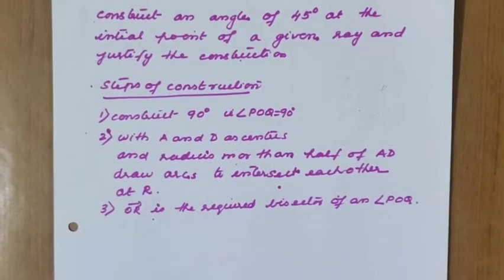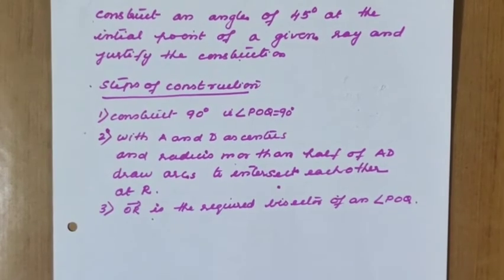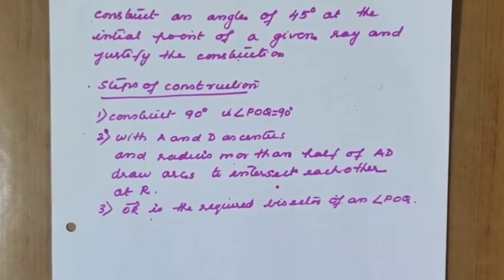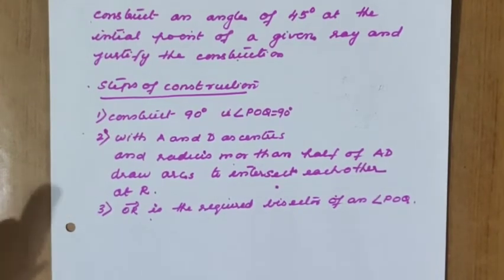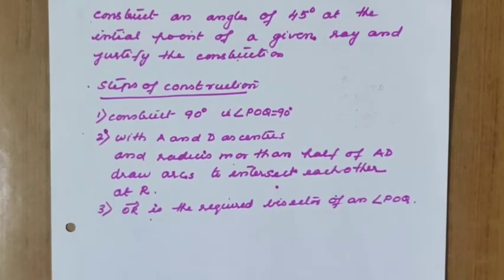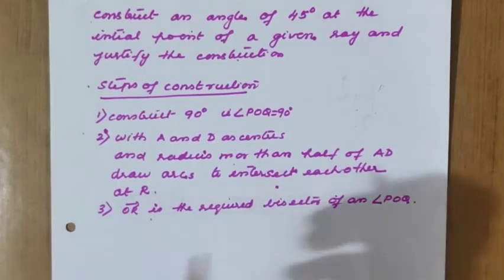Good morning children, we are continuing the same chapter — Chapter 11, Constructions. We will construct an angle of 45 degrees at the initial point of a given ray and justify the construction. Last class we saw how to construct 90 degrees, which is a standard angle construction, and now we are going for 45 degrees.